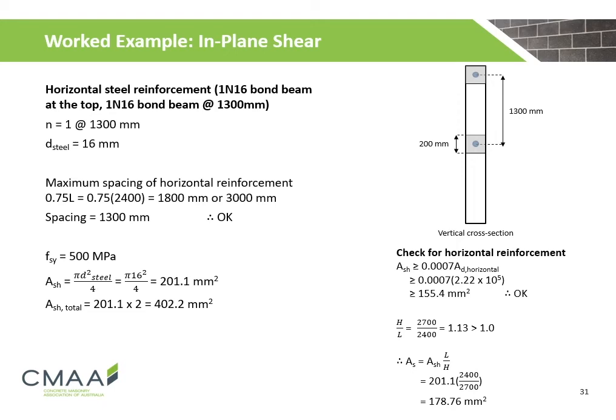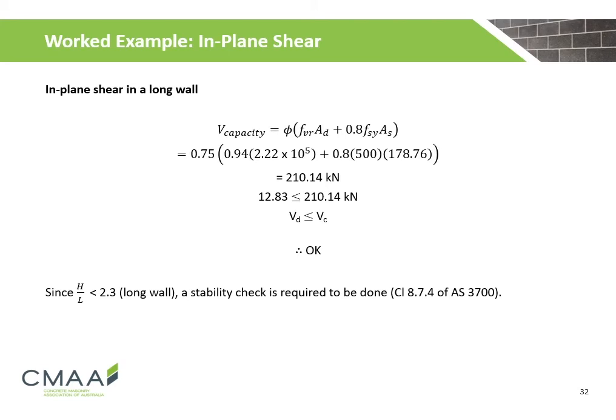For horizontal reinforcement, N16 steel bars are located at the top and at 1,300 mm from the top. The spacing shall be less than 0.75 times the length or 3,000 mm, and the chosen spacing satisfies this check. The total shear steel reinforcement for the two grouted cores is calculated to be 402.2 mm², which meets the minimum area of horizontal reinforcement check. As the aspect ratio is greater than 1, the chosen area of steel is calculated to be 178.76 mm² per clause 8.7.2 of AS3700. The in-plane shear capacity of the wall is calculated to be 310.14 kN, which is greater than the design shear loading of 12.83 kN. Therefore the wall is okay for the given in-plane shear loading.